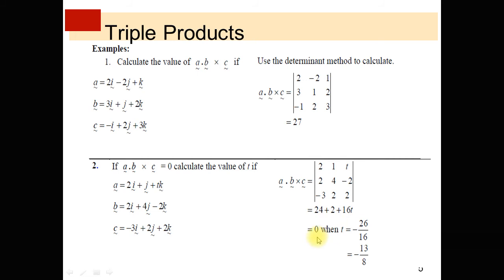So 24 + 2 = 26, giving 26 + 16T = 0. Therefore T equals −26 divided by 16, which simplifies to −13/8. So the value of T is −13/8. If we substitute T = −13/8 into vector A, giving A = 2i + j − (13/8)k, and find the scalar triple product, we get 0. We can verify by substituting T and expanding the determinant, which will equal 0.